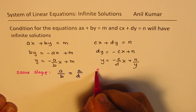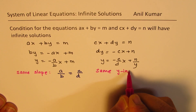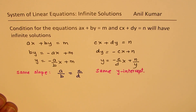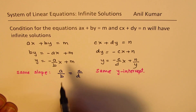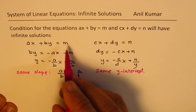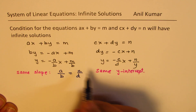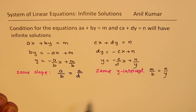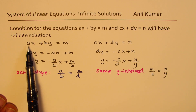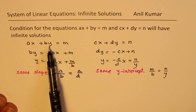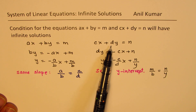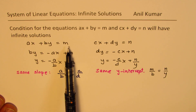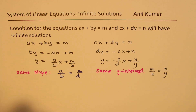The second condition is the same y-intercept. The y-intercepts are m/b and n/d, so m/b should be equal to n/d. So basically we are comparing the ratios of the coefficients of x and y — they should be equal — and that should also equal m/n. That becomes the full condition for us: all three ratios should be satisfied, meaning the equations are exactly the same.